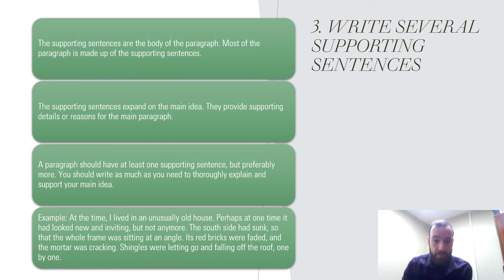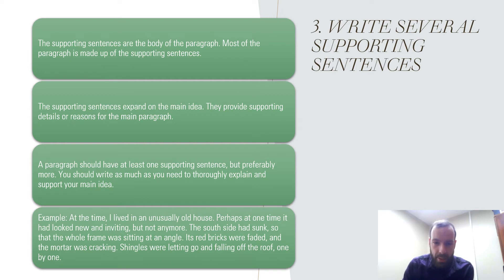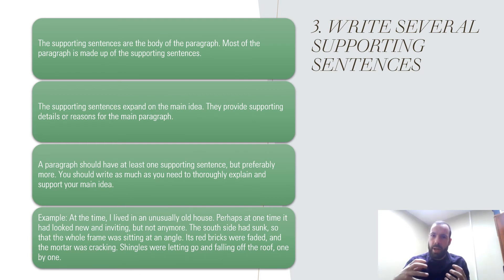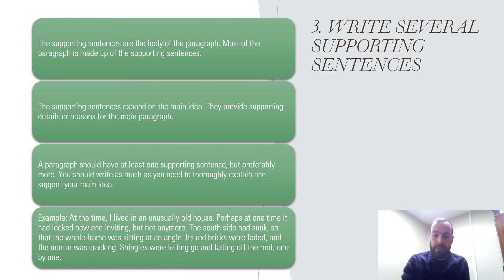Now we add sentences to explain just how old and run-down the house was: 'Perhaps at one time it had looked new and inviting, but not anymore. The south side had sunk so that the whole frame was sitting at an angle. Its red bricks were faded and the mortar was cracking. Shingles were letting go and falling off the roof one by one.' These are really good descriptive sentences that paint a picture for the reader.